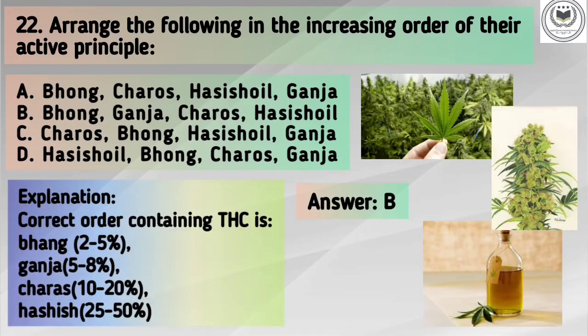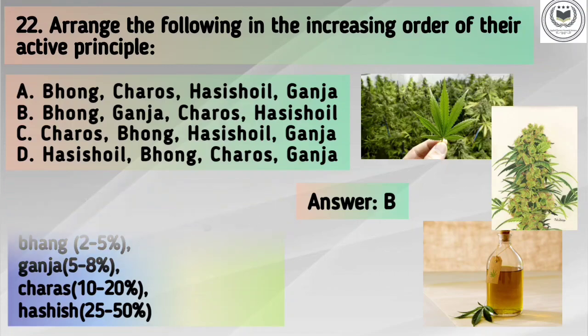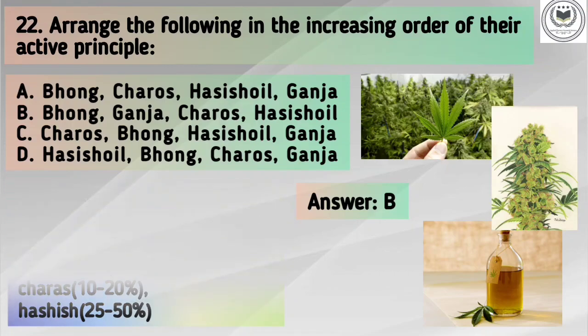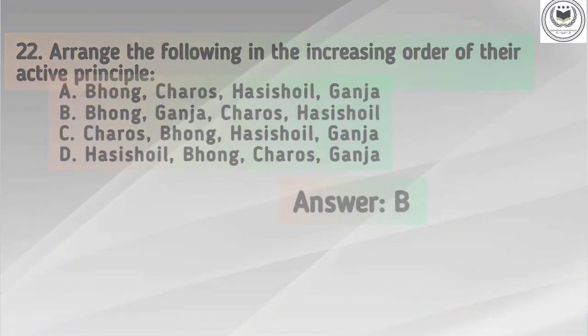Bhang contains 2–5% THC. Ganja contains 5–8% THC. Charas contains 10–20% THC. And Hashish oil contains 25–50% THC.